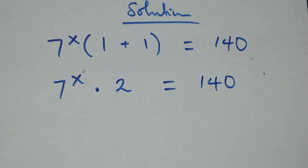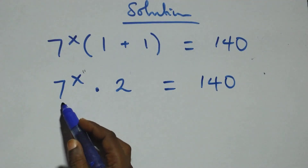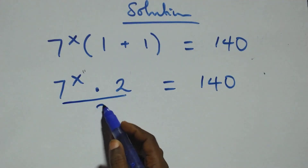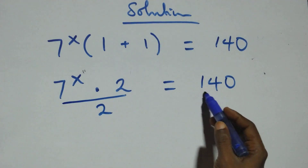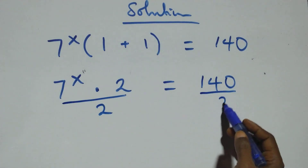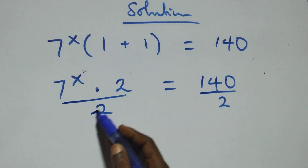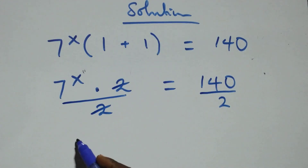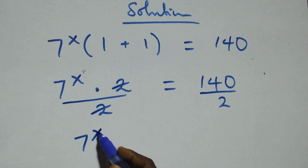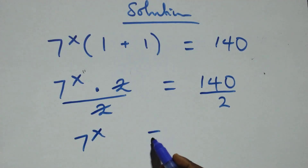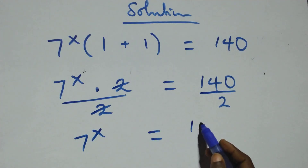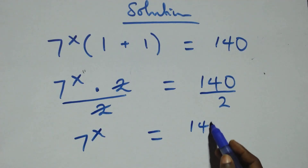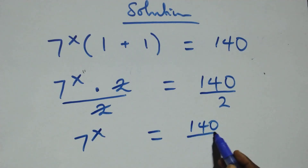The next step here: divide both sides by 2. We divide this side by 2 and also divide the other side by 2. The 2s cancel each other, and we have 7 raised to power x equals 140 over 2.